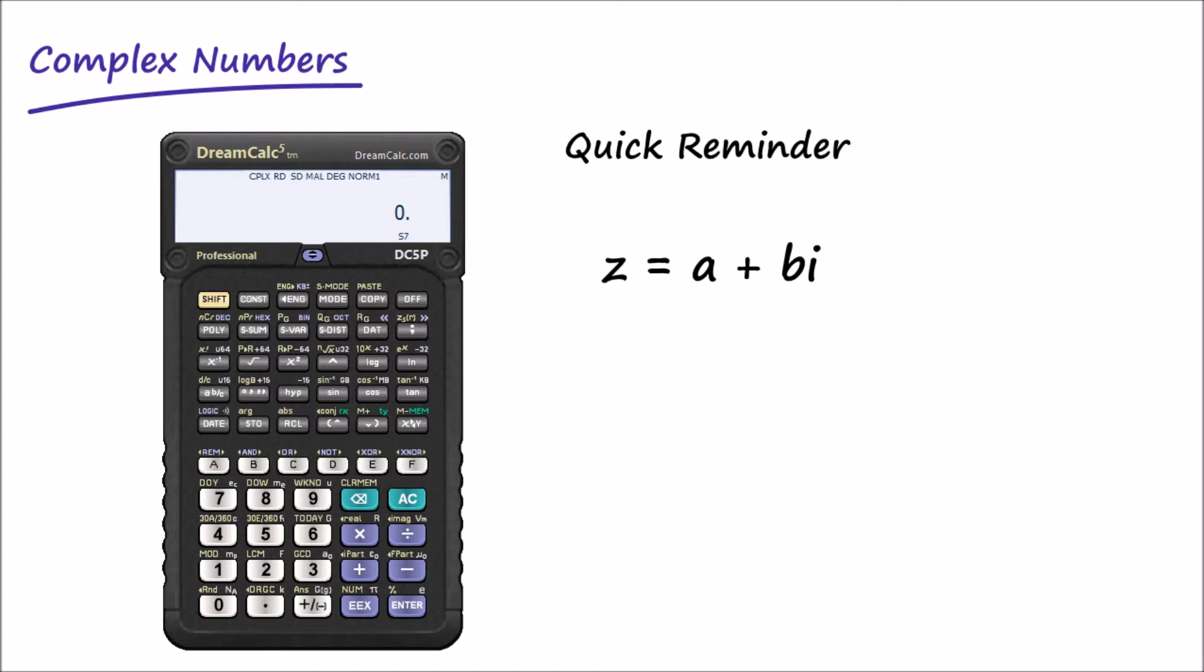A complex number has two parts and is expressed in the form a plus bi, where a is the real part of the number and b the imaginary part.